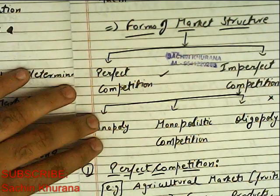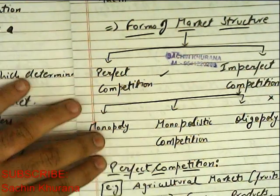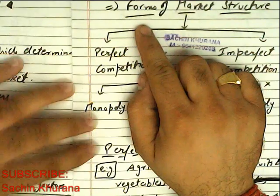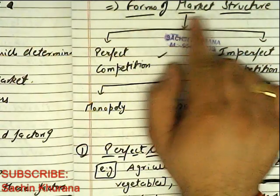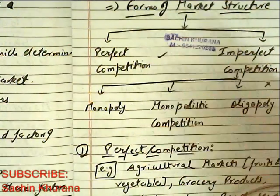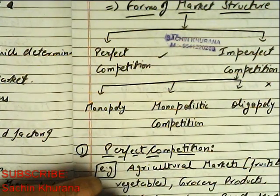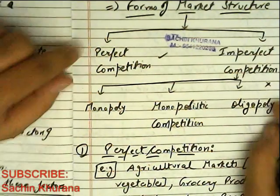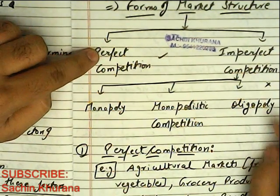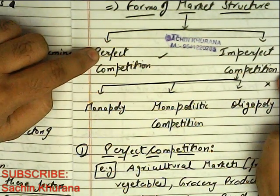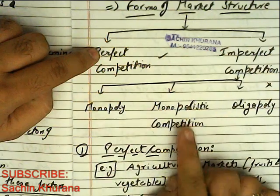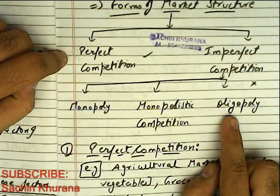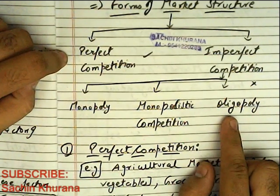Hello dear students, I hope you all are well. This is your teacher Sachin Khrana and today we will cover the forms of market structure: perfect competition and imperfect competition. Under imperfect competition we have monopoly, monopolistic, and oligopoly.